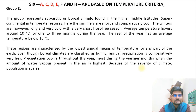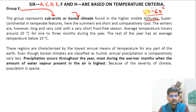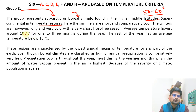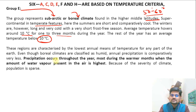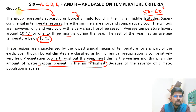Group E is for subarctic or boreal climate. This area is a frontal zone of the polar belt, found in the higher mid-latitudes — roughly between 50 and 60 degrees north of the equator — with super-continental temperature features. Average temperature covers about 10 degrees Celsius for only one to three months, and temperatures below 10°C are common. Precipitation occurs largely throughout the year, especially during warmer months when water vapor in the air is highest. Group E has no distinct subclasses; it represents the subpolar belt.